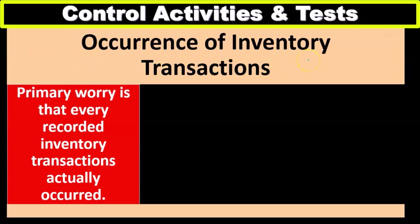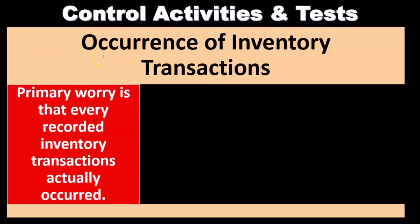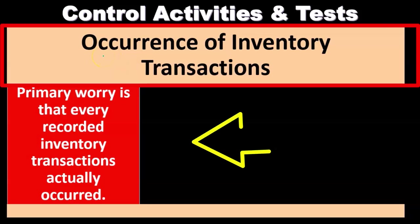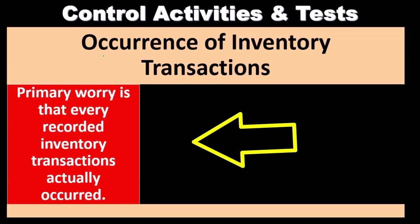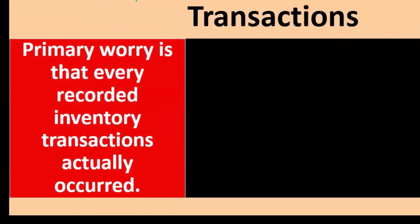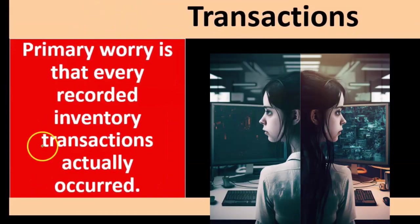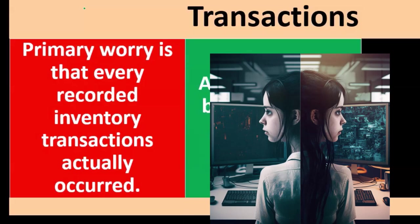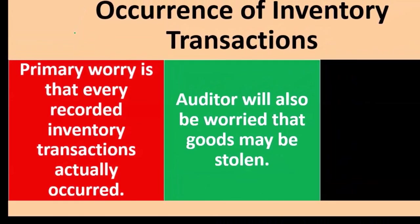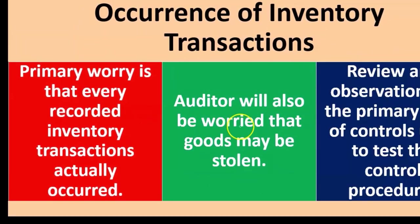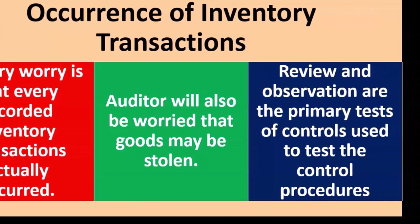Now we look at inventory transactions. For the assertion of occurrence, the primary worry of the auditor is that every recorded inventory transaction actually occurred — did it actually happen? Another concern within occurrence is that goods may have been stolen. The primary tests of controls for occurrence are review and observation.